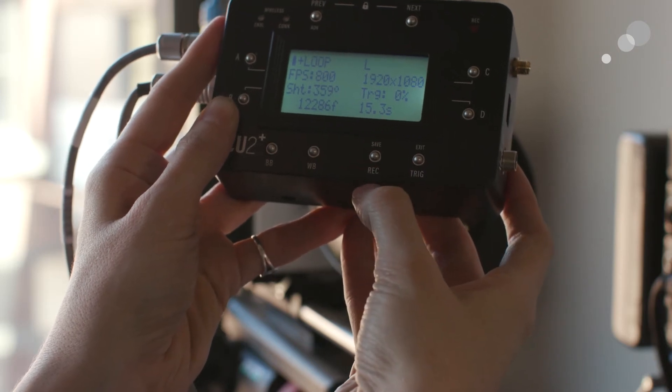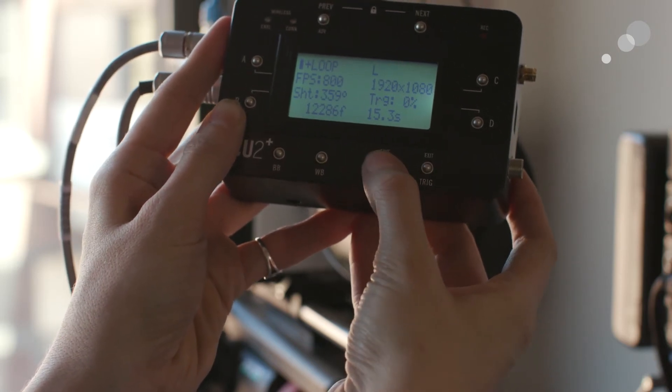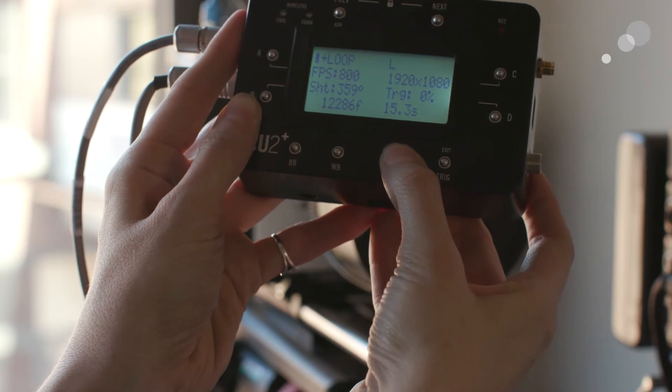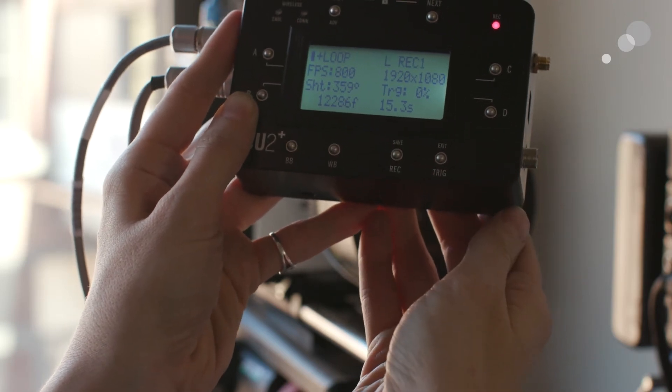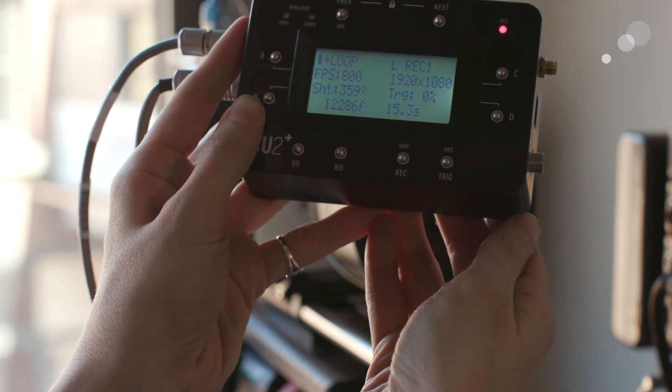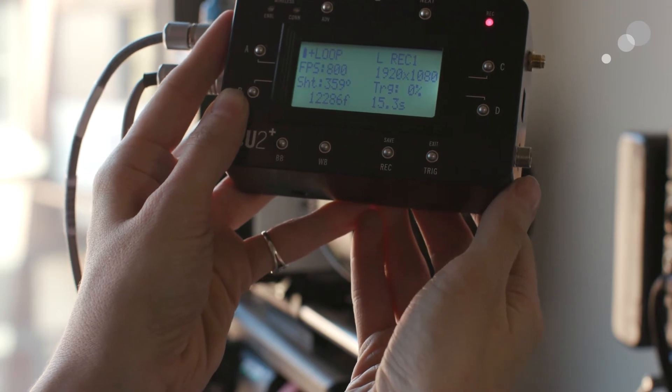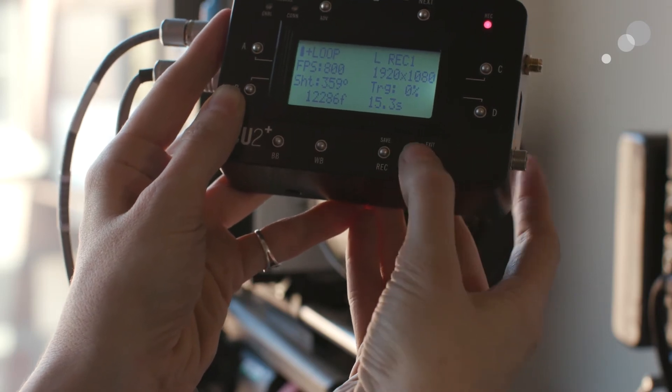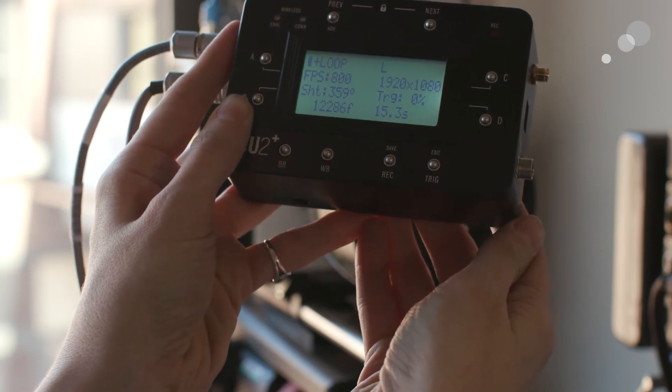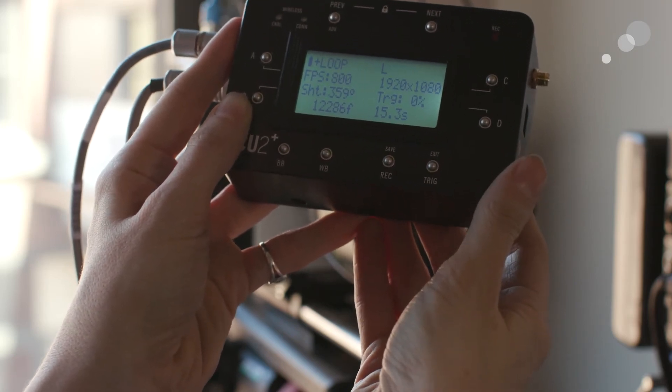If I want to go into capture mode, if I'm ready, I can hold this record button down, and both cameras will go into capture mode. So now it is caching. And when I'm ready, once the action has occurred, on cut, I would hit trigger, and that has saved the shot to the internal RAM.